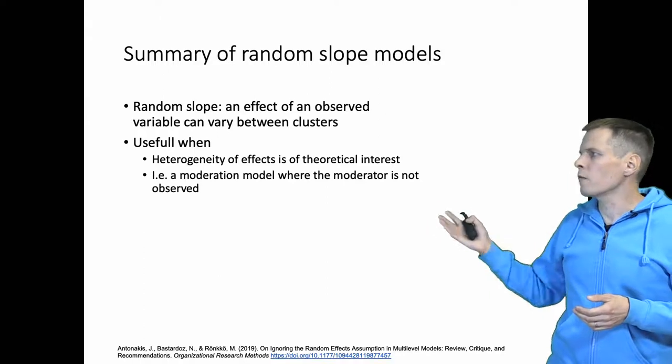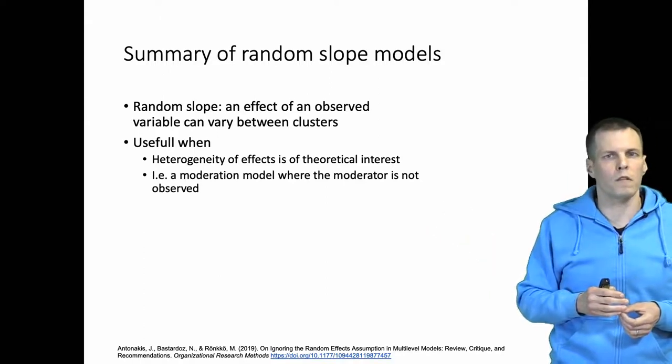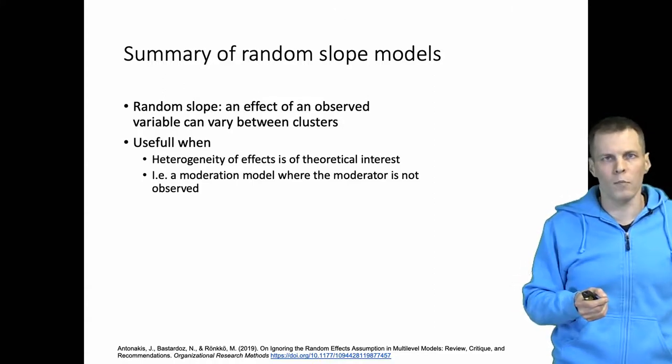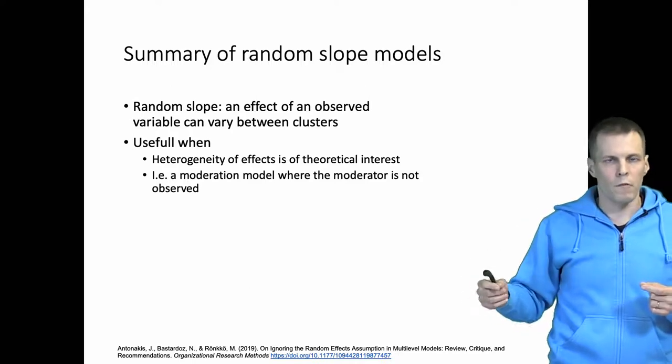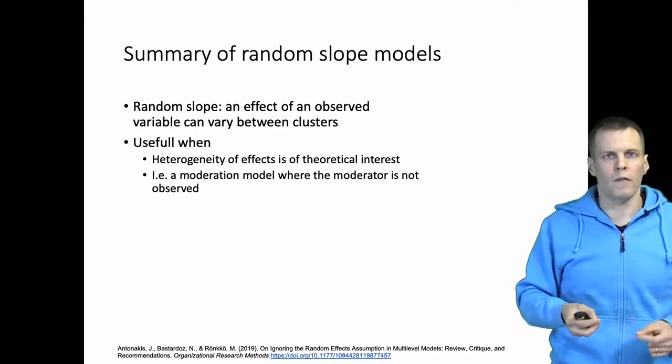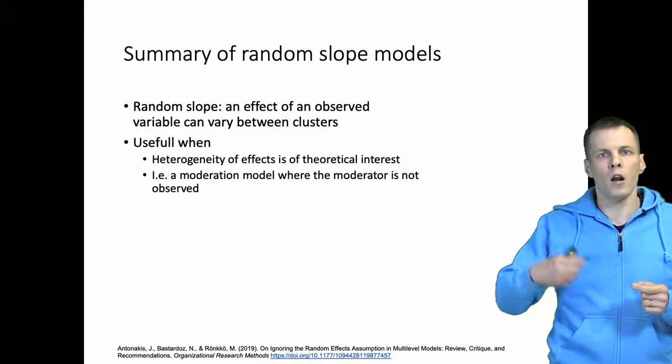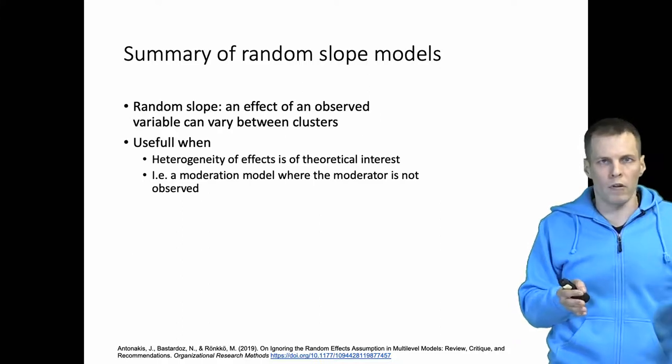You can also think of these as moderation models where the moderator is not observed. In a moderation model, the regression coefficient of one variable depends on another observed variable. In the random slope model, we have a regression coefficient of one observed variable that depends on an unobserved variable. So this is kind of like a moderation model without the moderator being observed.